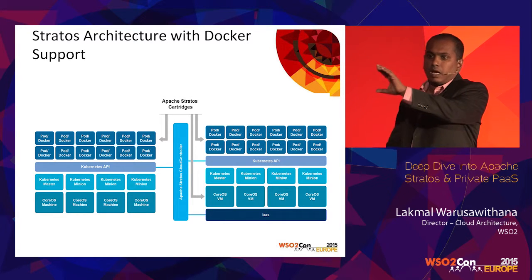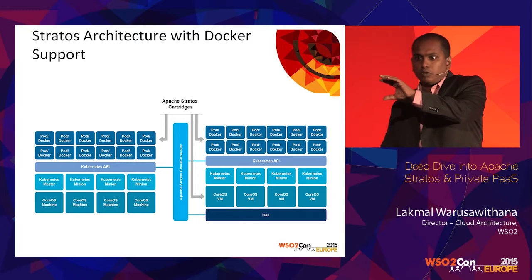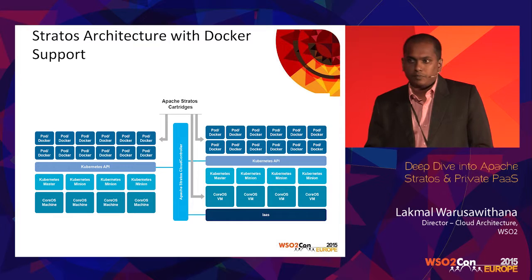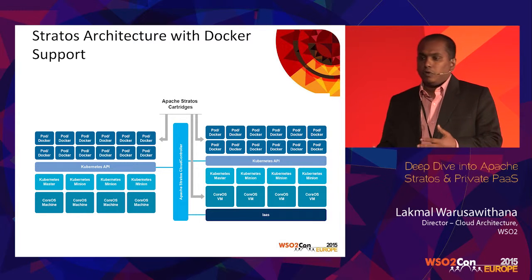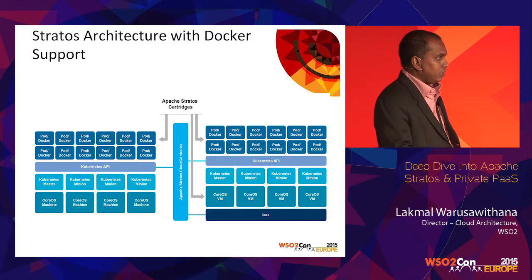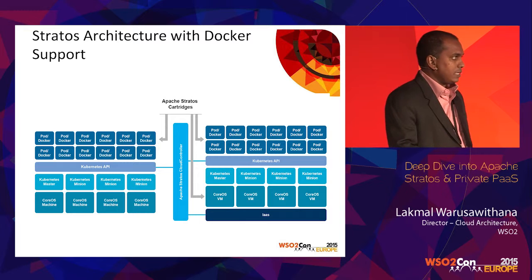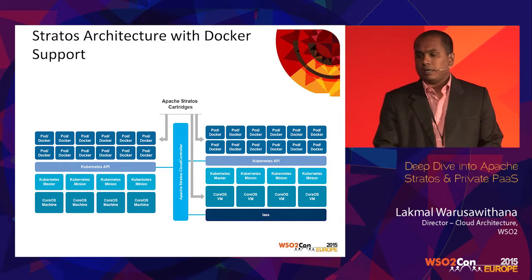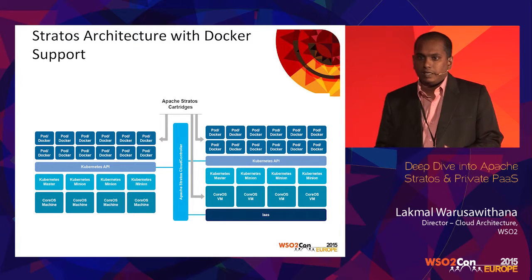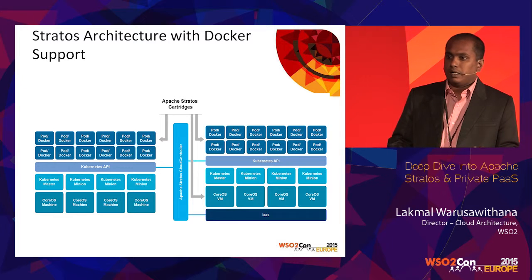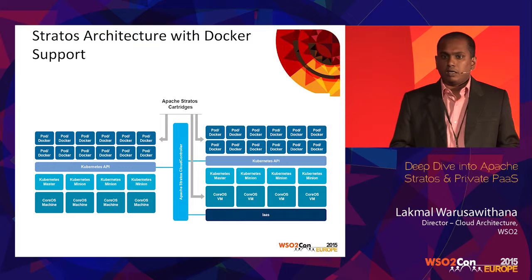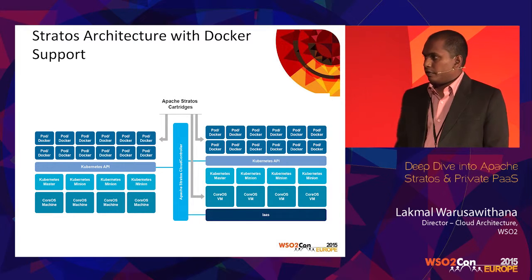You can scale the application at the top layer within the Kubernetes cluster — two-level scaling: application-level scaling with Docker support, and Docker host scaling underneath with CoreOS VM scaling. And if you don't have IaaS to run a platform as a service, you can install Docker, CoreOS, and Kubernetes on bare-metal machines, create a Kubernetes cluster, and run Stratos on top of that. This is another advantage — in some cases IaaS is very expensive, but with this support you can run without IaaS.